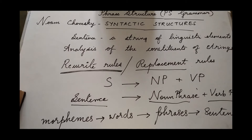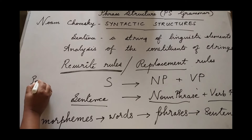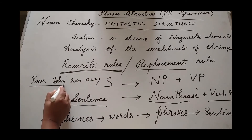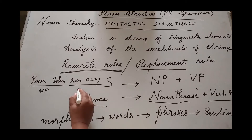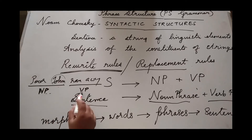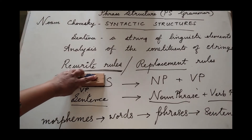Take for example the sentence 'Poor John ran away.' So what is the S there? S is the sentence — 'Poor John ran away' — that is a string of linguistic elements. And it can be rewritten as noun phrase plus verb phrase. Poor John constitutes the noun phrase, because the noun comes here. And 'ran away' constitutes the verb phrase, because you find the verb here. So this is a simple example of a rewrite rule or replacement rule.